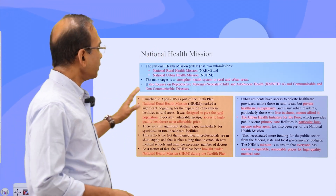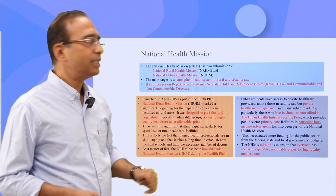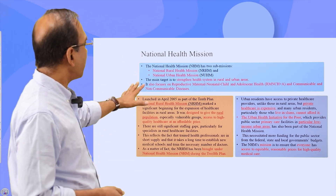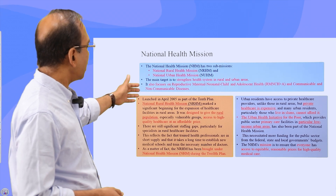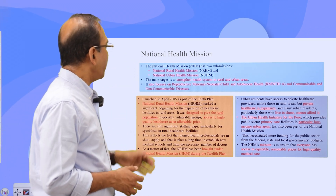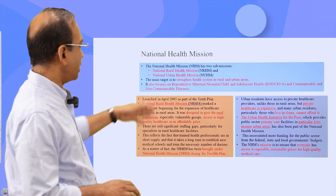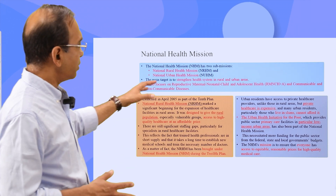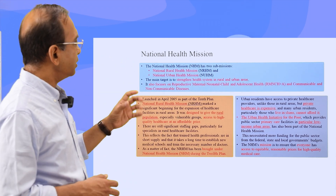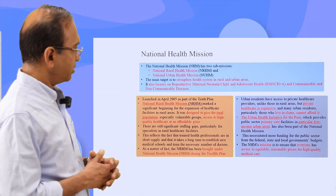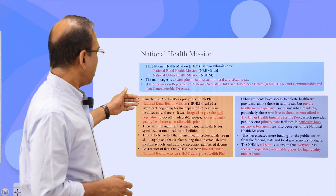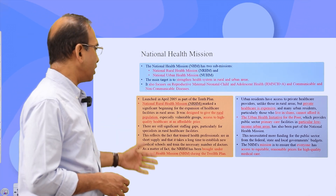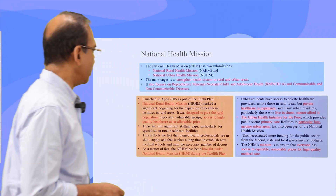The National Health Mission is divided into two parts: National Rural Health Mission and National Urban Health Mission, and now they have been merged. The main target is to strengthen health systems in rural and urban India, and it also focuses on reproductive, maternal, neonatal, child care, and administrative health issues. The National Rural Health Mission was launched in 2005 and brought under the National Health Mission during the 12th Five-Year Plan.